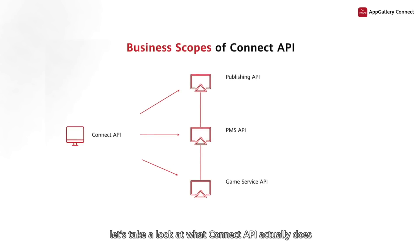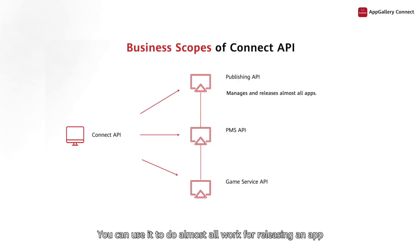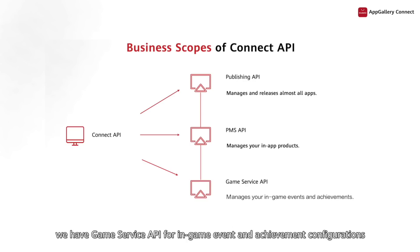Now, let's take a look at what Connect API actually does. Connect API offers several services. The first one is Publishing API — you can use it to do almost all work for releasing an app. The second one is PMS API, which manages in-app products. Finally, we have Game Service API for in-game event and achievement configurations.